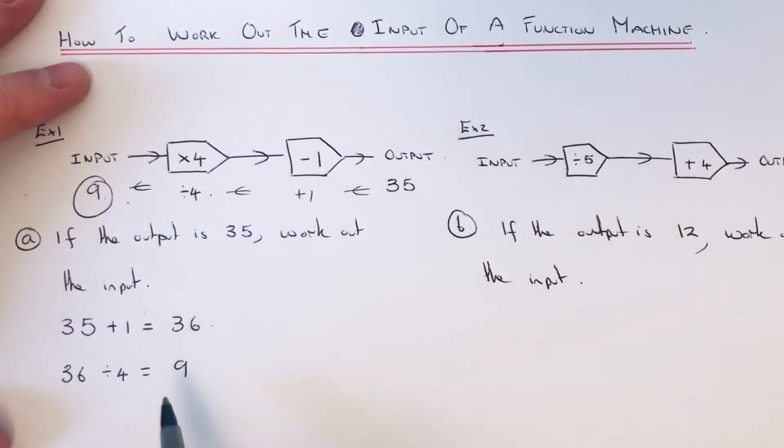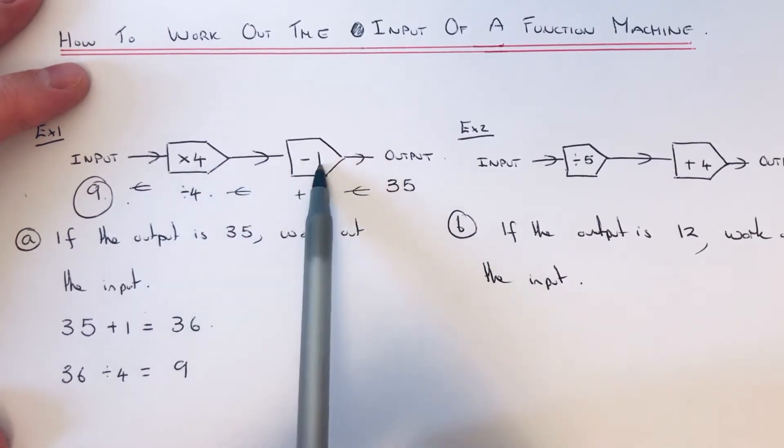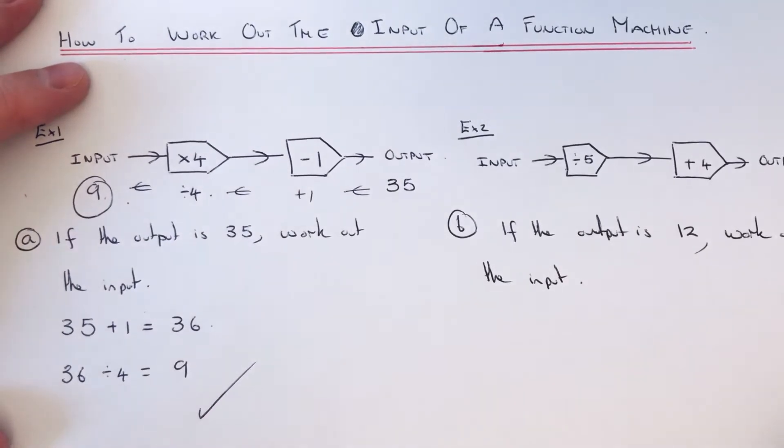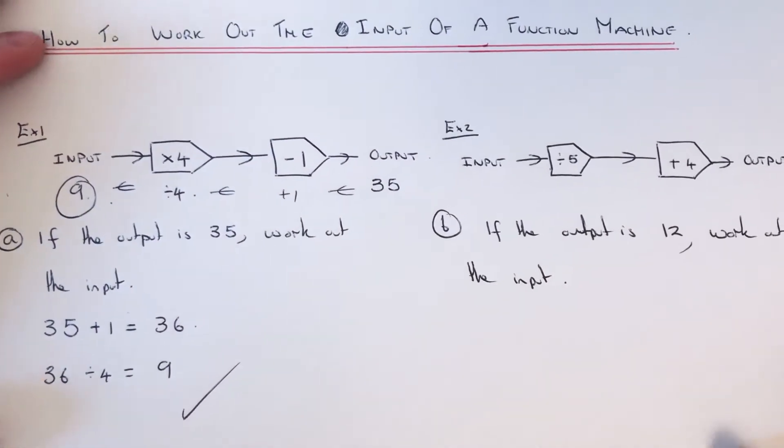You can actually check that answer to see if it's correct. We can do that by putting 9 into the function machine. So 9 times 4 is 36, take away 1 does give 35. So we know that answer is correct.